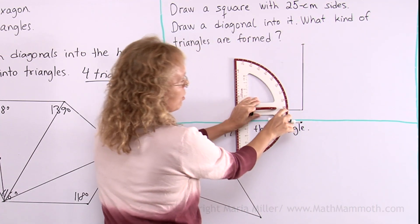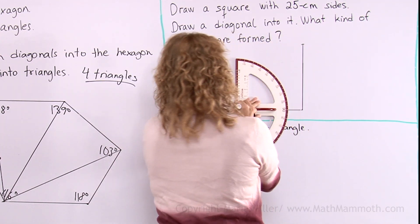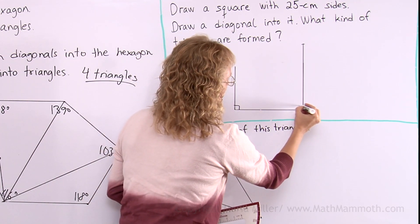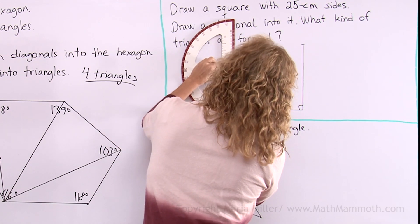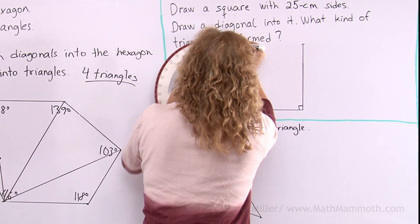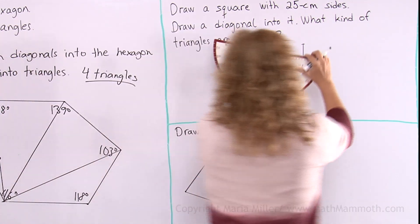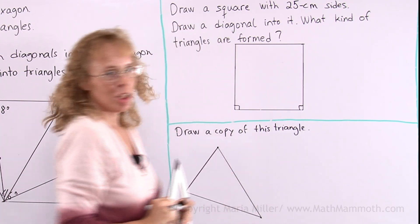Again, I need to line up this mark with my existing line. There I get a right angle here. And here. Now measure the 25cm. There. And now all I need to do is draw the fourth side. All done!